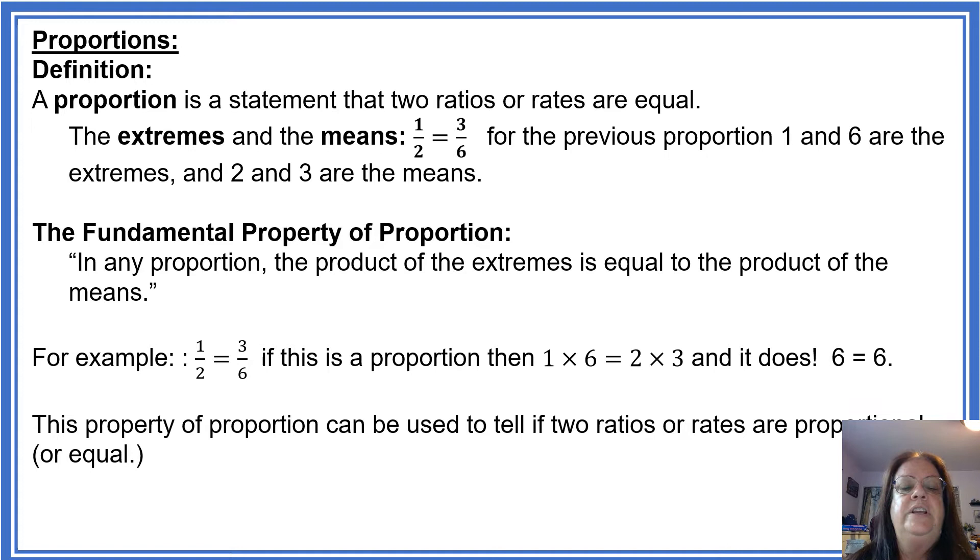A proportion is a statement with two ratios or rates that are equal. The extremes and the means for a proportion are as follows. The extremes are the first and the last, and the means are the two in between, the two and the three in this case.